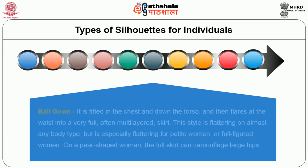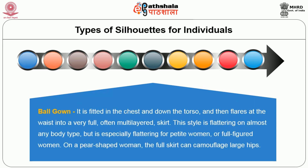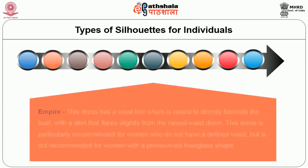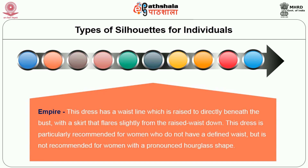Types of silhouettes for individuals. The first one is ball gown. It is fitted in the chest and down the torso and then flares at the waist into a very full, often multi-layered skirt. This style is flattering on almost any body type but is especially flattering for petite women or full-figured women. On a pear-shaped woman, the full skirt can camouflage large hips.